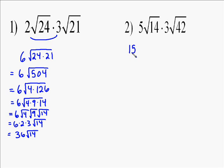To do number 2, we do the same thing. Multiply the 5 and the 3, so multiply what's outside the radical first, then what's inside the radical. 14 times 42 is what we need to multiply together.